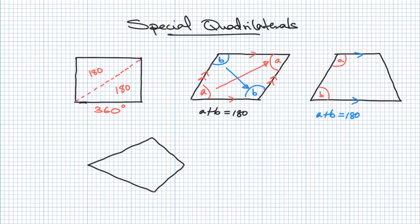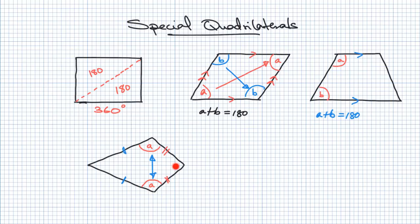The last one is a kite. There's nothing parallel in a kite, but these two sides here have the same length and these two sides have the same length. The one rule about a kite and its angles is that these two opposite angles here are the same. However, the other two angles are not the same as each other, so please do not make that mistake.